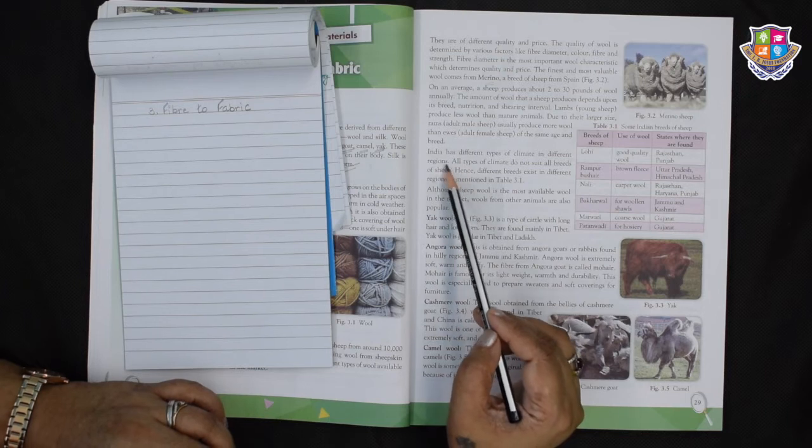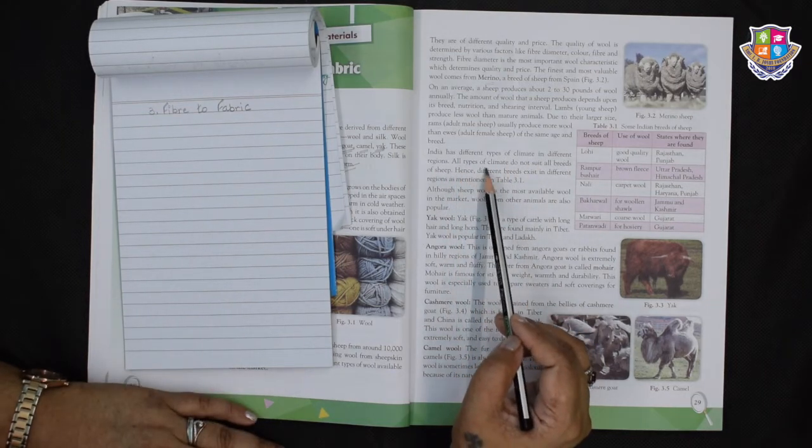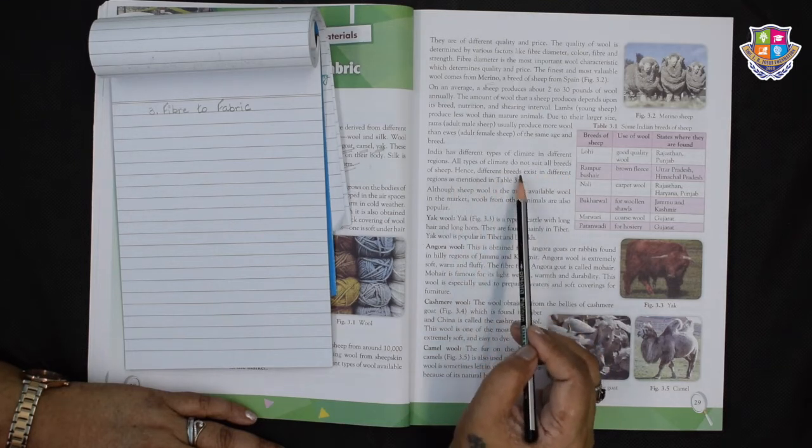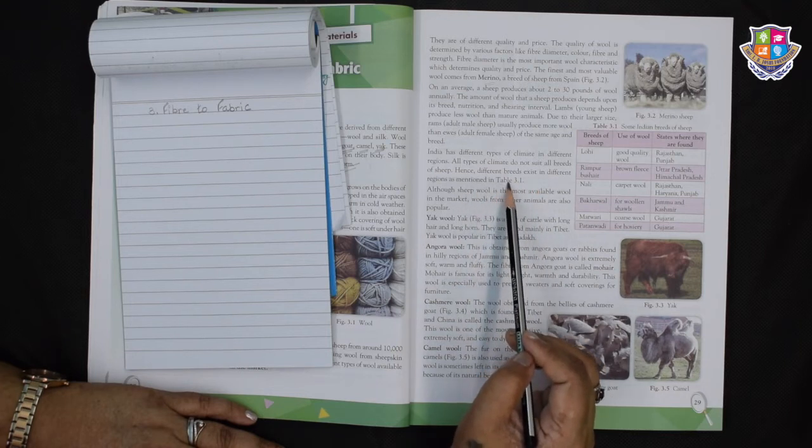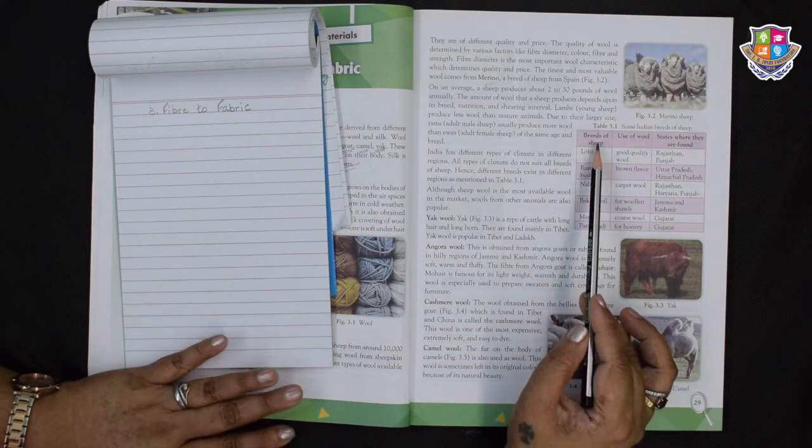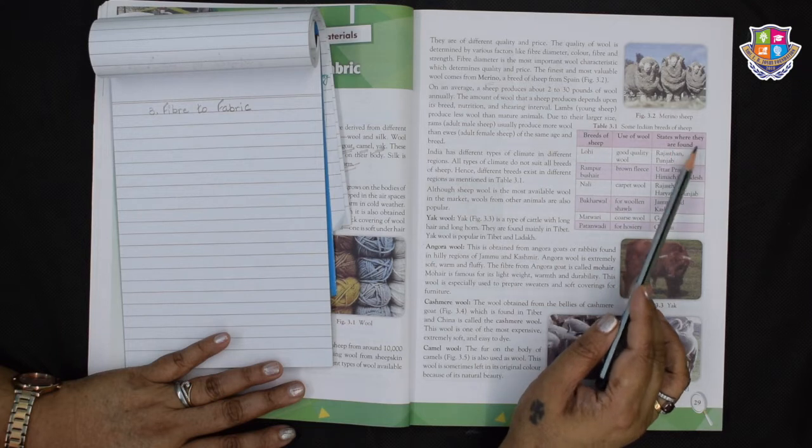Due to their larger size, rams, that is the adult male sheep, usually produce more wool than the eaves, that is the adult female sheep of the same age and breed. Now coming to India, India has different types of climate in different regions. All types of climate do not suit all breeds of sheep.